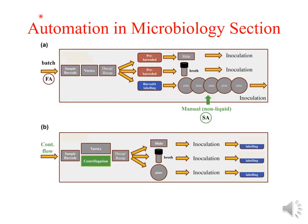Automation also exists in the microbiology section. There can be a barcoding system, vortexing, recapping, and decapping, and it is run in batch analysis where pre-barcoded samples are loaded — it can be a slide, broth, or plate — all carried out by an automated system.